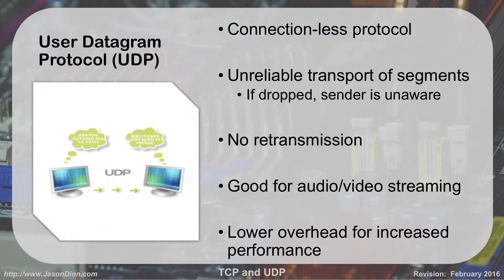UDP is really good for audio and video streaming because it has very low overhead — there's no three-way handshake, no checking of the data, which saves bandwidth. It's good for audio and video because it's faster, and if you miss one or two packets inside a video, the files are such large sizes that the video will still play just fine. Whereas if you're sending a single picture and you're missing a chunk, you might visually see it.